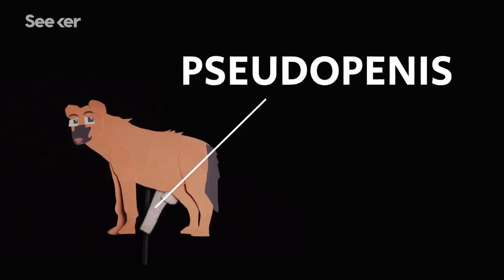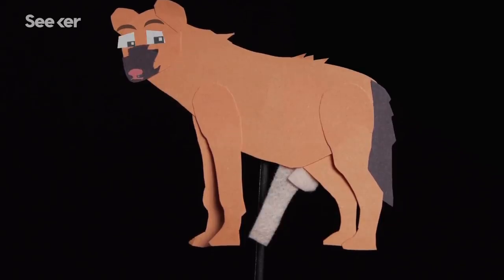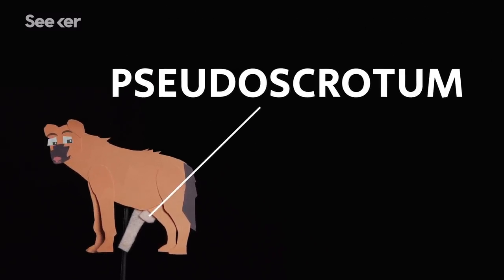In addition, the female's labia are fused together, and they also hang from the body which looks like a scrotum. In fact, this is called, you guessed it, a pseudo-scrotum.